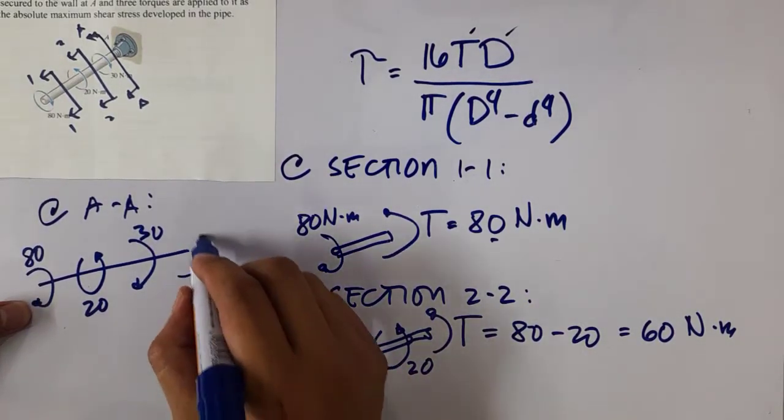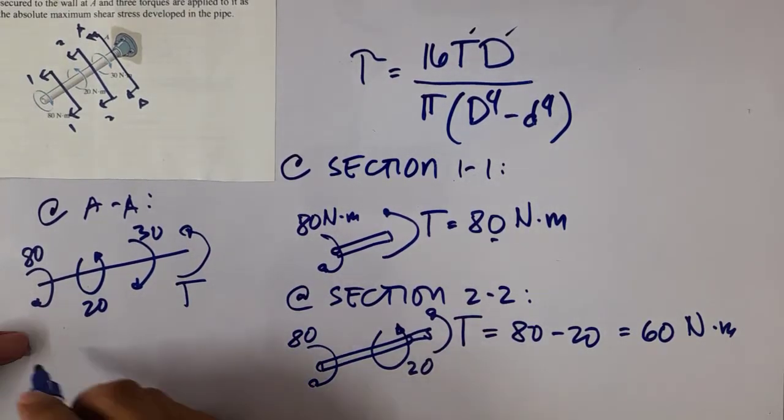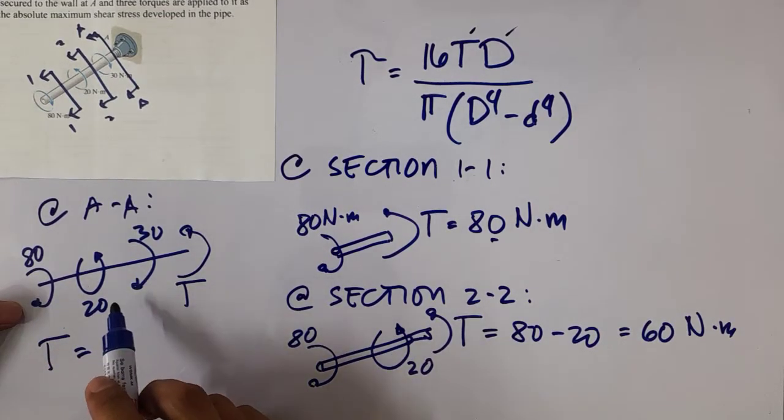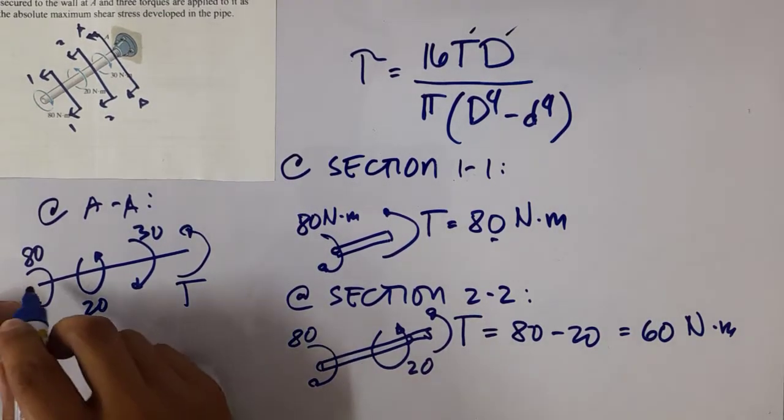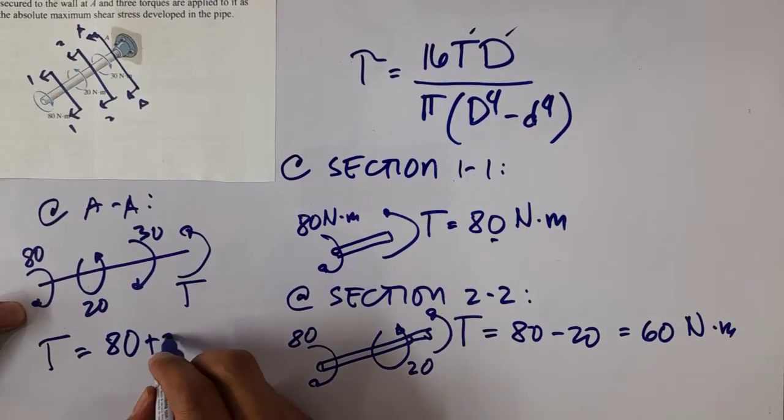So you have 80, 30, so probably our internal torque here is directed in that direction. Torque is equal to 80 plus 30 minus 20. So 80 and 30 are in the same direction.